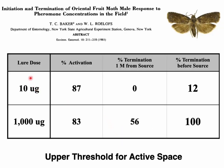What they found is that both the 10-microgram and 1,000-microgram lures activated flight in OFM males. But at one meter from the source, males flying toward the low dose kept flying, whereas 56% of males stopped flying toward the higher dose of 1,000 micrograms — the dose was too high. Just before the source, 12% at the low dose stopped, but 100% of males stopped flying toward the higher dose. In other words, they found an upper threshold for active space.